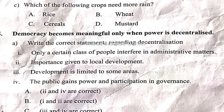Democracy becomes meaningful only when power is decentralized. To write the correct statement regarding decentralization: only a certain class of people interfere in administrative matters; important given to local development; development is limited to some areas; the public gained power and participation is governed. The answer is A — this statement is correct.